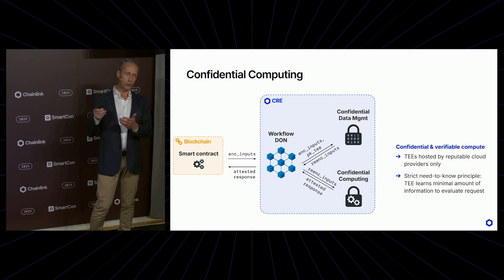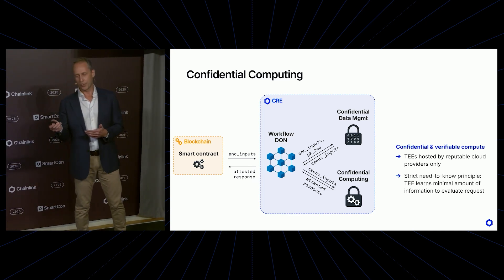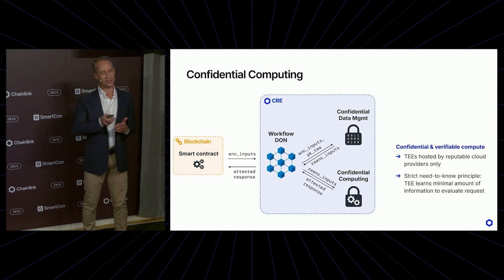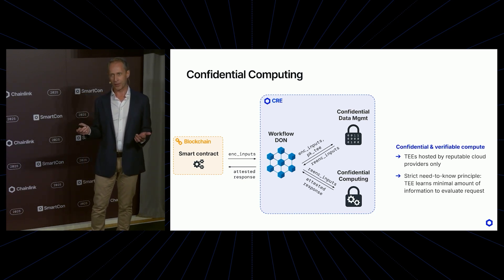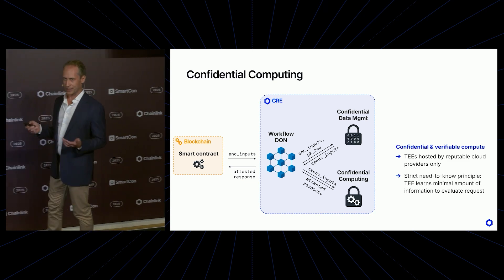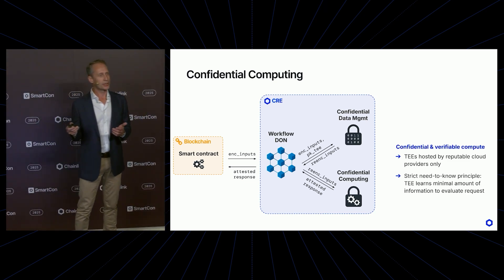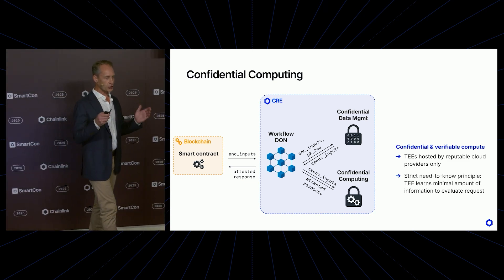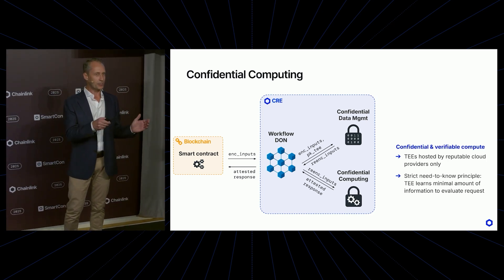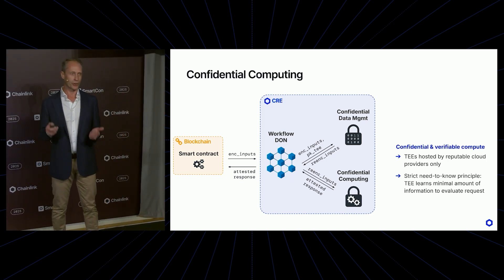Secondly, we are going to enforce a strict need-to-know principle on all computations taking place in those enclaves. And we can do that, because using the Confidential Data Management, we can make sure that the only thing that gets decrypted inside the enclave are the exact inputs that are needed for this computation. With razor-sharp precision, we say: this computation needs these inputs.